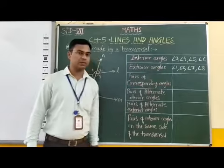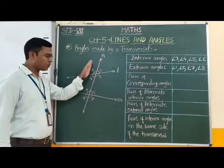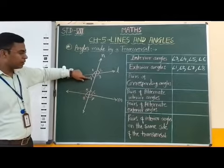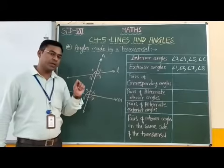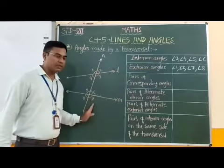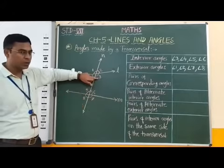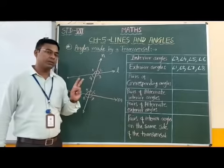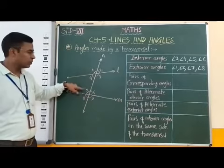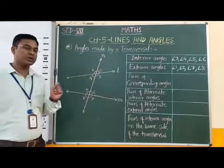Pairs of corresponding angles. This is the transversal, and if you consider only the left side angles of this transversal, then the pair of upper angles and pair of lower angles are called pairs of corresponding angles. Therefore, in this figure, angle 1 and angle 5, angle 4 and angle 8, angle 2 and angle 6, angle 3 and angle 7 are called pairs of corresponding angles.